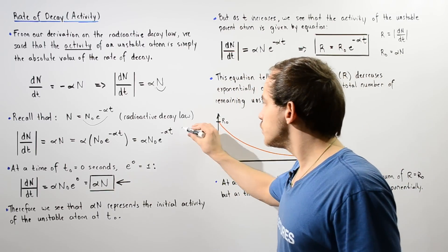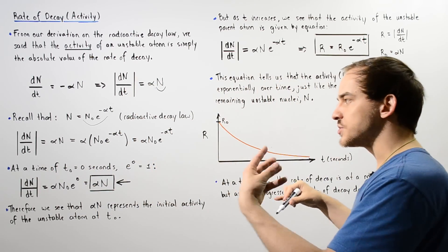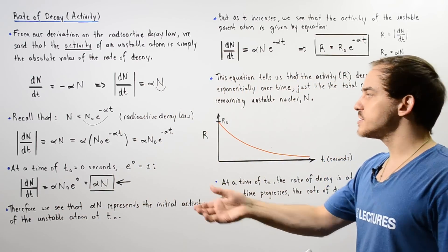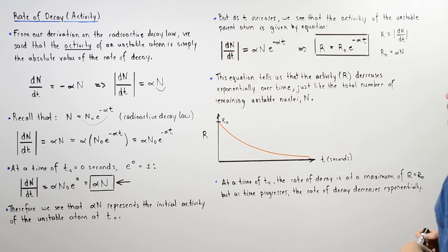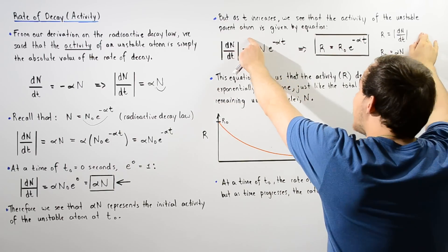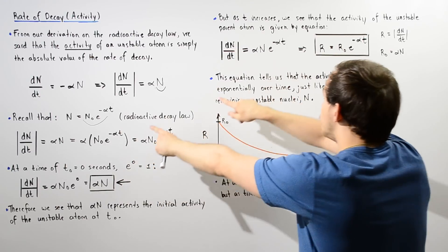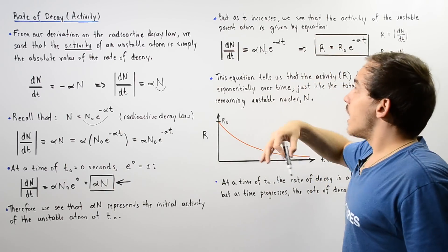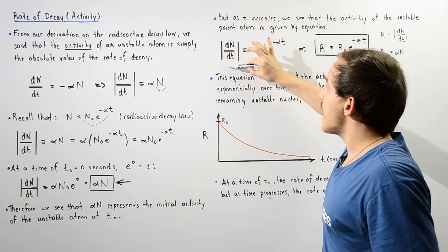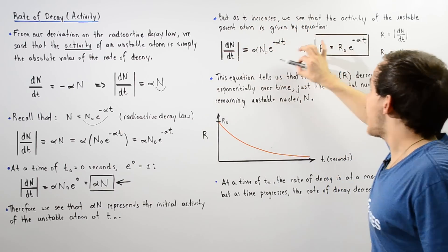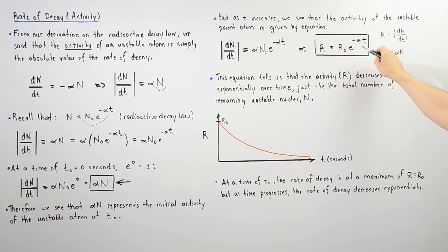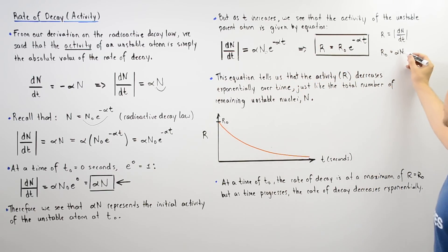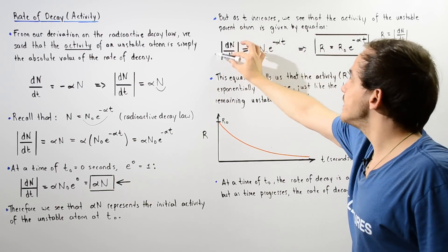We can use this equation to graph or present how our activity changes with respect to time. As t increases, the activity of our unstable parent atom is given by this equation. It is very common to replace the entire quantity alpha times n-naught with r-naught, and the full expression with r, giving us a simplified equation. This form is also sometimes known as the radioactive decay law, where r-naught is the initial activity at a time of zero.